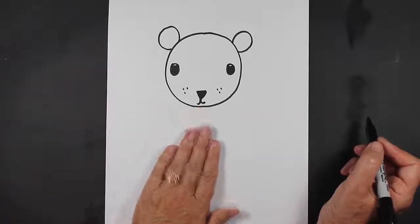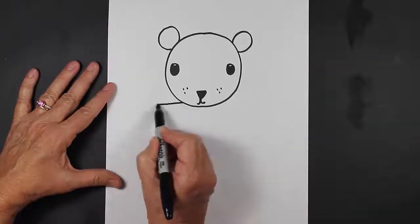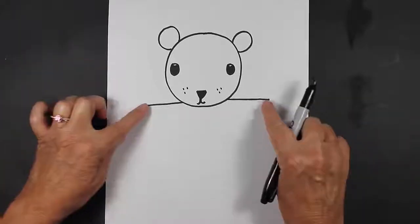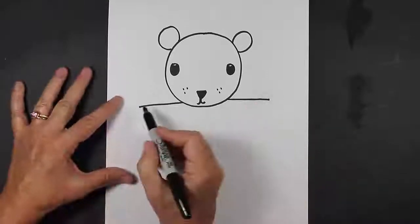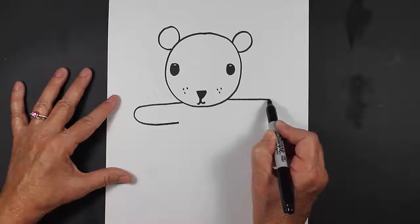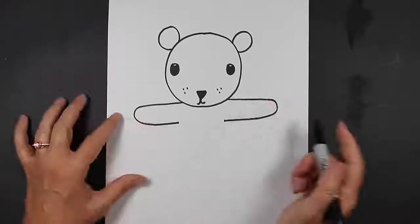The next thing that we're going to do is make our teddy bear's body. So we're going to come out with a straight line and come out with a straight line. Then we're going to curve our lines around and then come back in. And these are going to be our teddy bear's arms and hands.